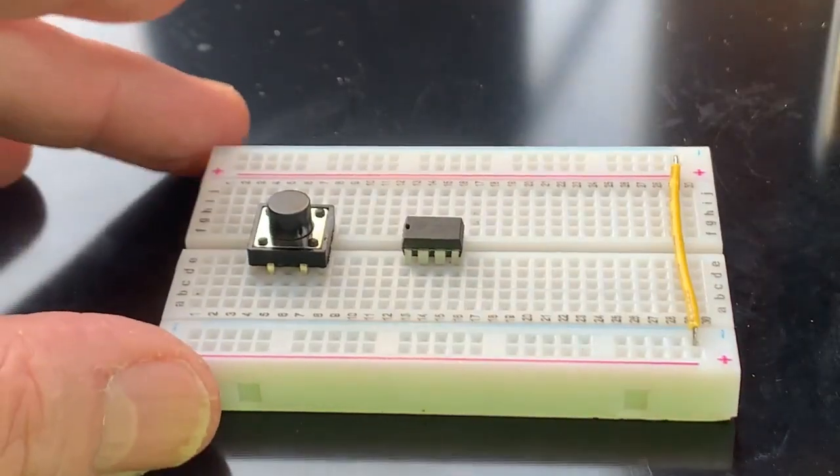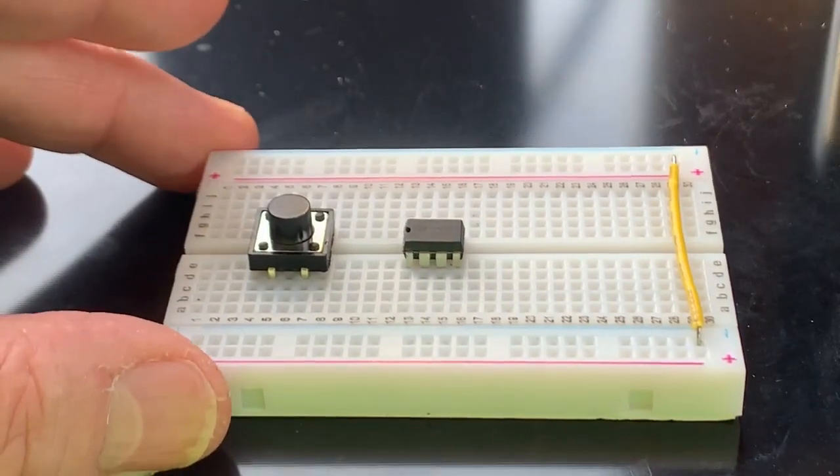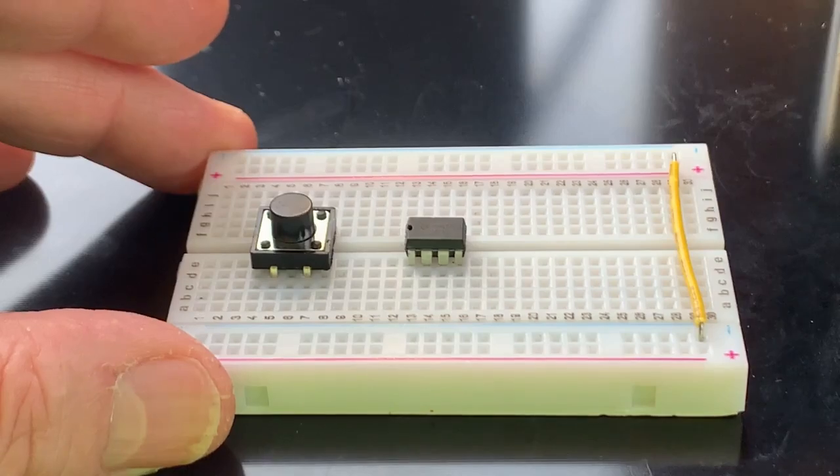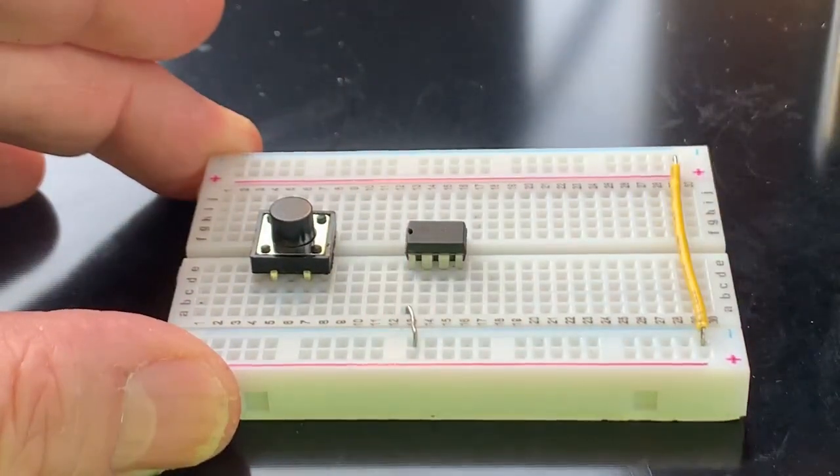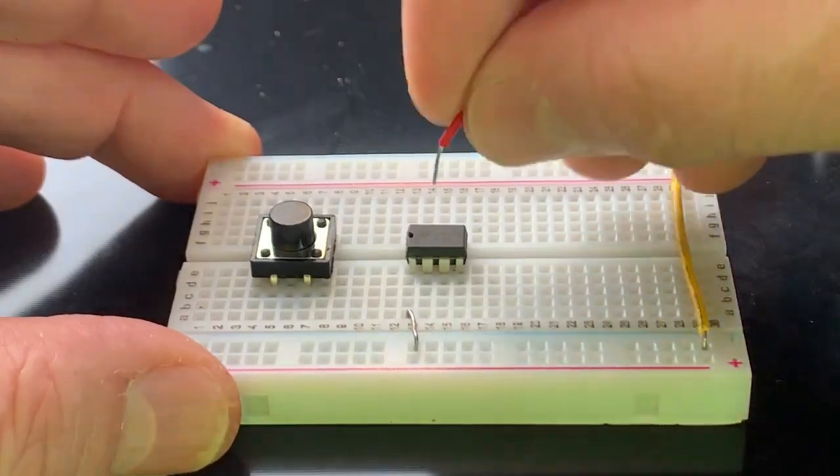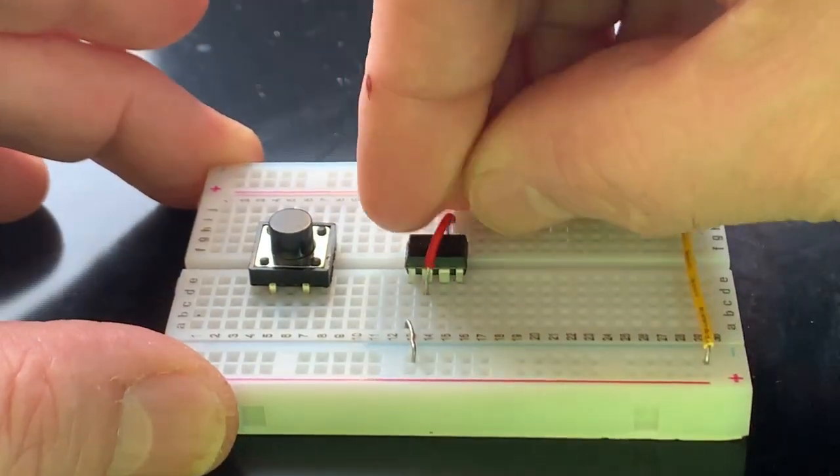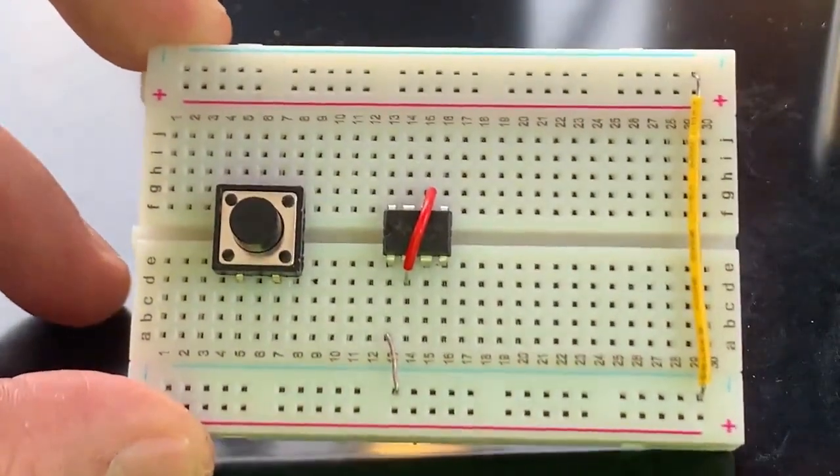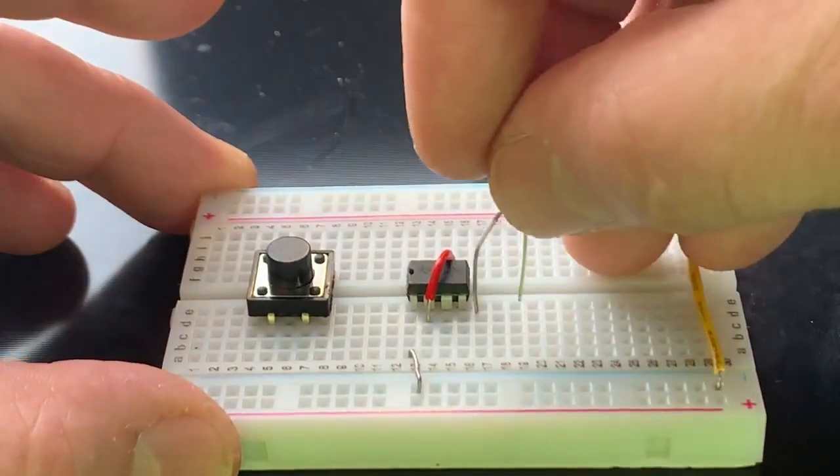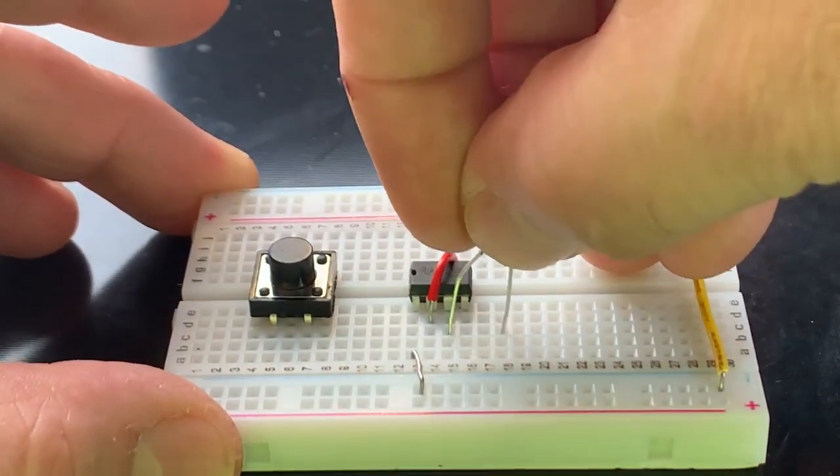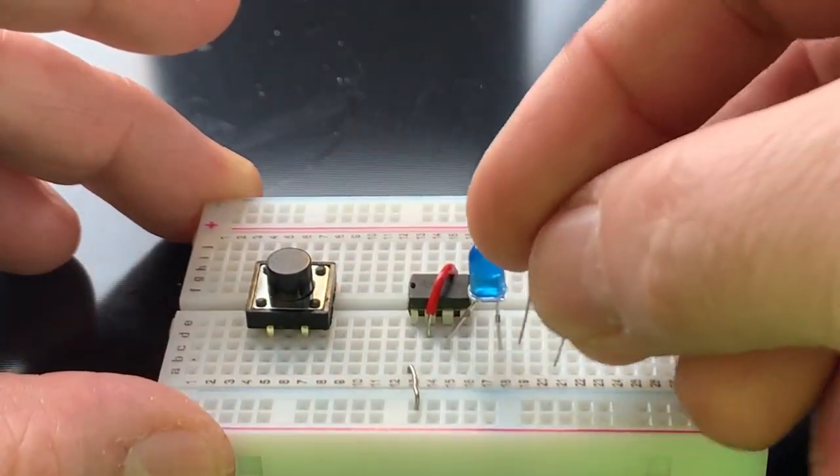If we work our way around the LM555 chip working the pins, the very first pin, pin number one here, goes to ground. Pin two gets connected over to pin six. Pin three is the output pin. We'll put the LED there. We'll use a 1k ohm resistor.